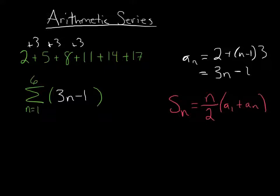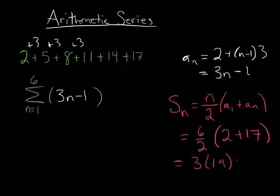So we need to know what the first term and the last term are. So let's look at this. We have n is 6, so we have 6 divided by 2. The first term is 2, the last term is 17. And so we have 3 times 19, that would be 57. So the sum of these 6 terms is 57.